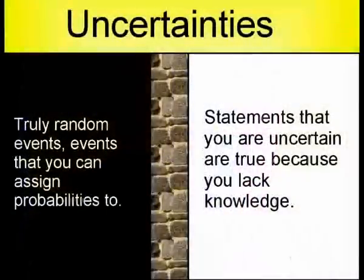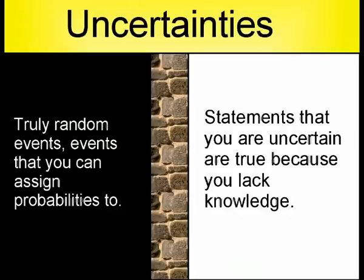In such a case, you divide up uncertainties into physically random events and things that are only uncertain because you lack knowledge. And with such a division, a frequentist will handle these two types of uncertainties very differently from each other. In this strong interpretation of physical probability, applications of probability theory becomes rather limited, I think.